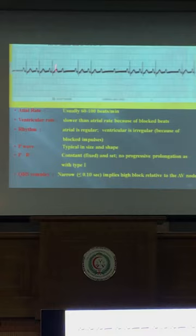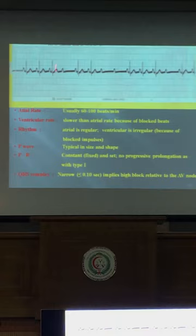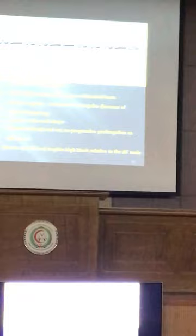This is also second degree heart block: P then QRS, P then QRS, then P without QRS — some passing and some blocked. This is second degree heart block type two. Why? Because the PR interval is constant — it does not progressively increase before the dropped beat.